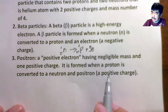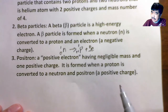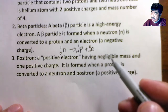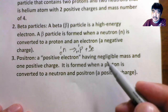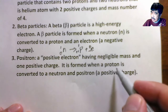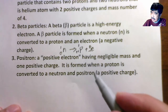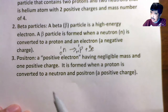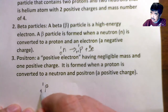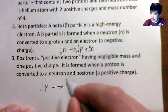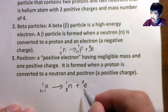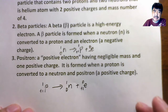Next is called a positron, also called a positive electron. It is a particle that carries one positive charge but no mass. Positrons are formed when a proton is converted to a neutron and a positron. A proton has one mass and positive charge; it forms a neutron with one mass and zero charge, plus a positron with zero mass and one positive charge.